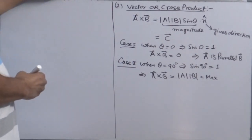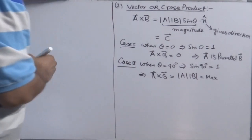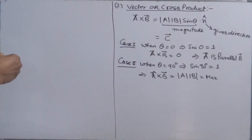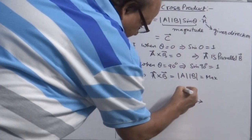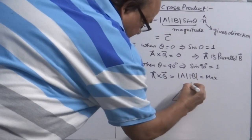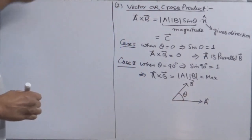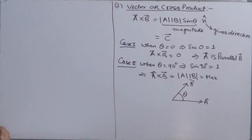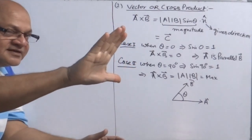Now the question arises: since vector C is a vector obtained after taking the cross product of two vectors, how do I find the direction of vector C? The right-hand thumb rule is the easiest method to find the direction of the cross product of vectors A and B. So keep your right hand ready — stretch your fingers and thumb at right angles to each other.